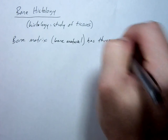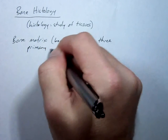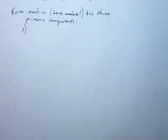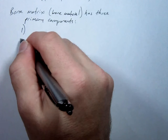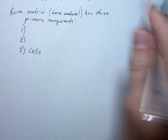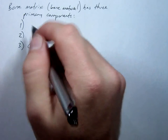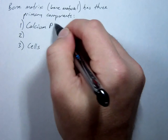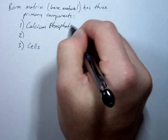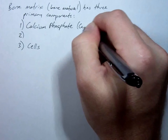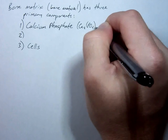It has three primary components. Cells would be number three as far as weight, but the number one component by weight is calcium phosphate. Technically, it's tricalcium phosphate — Ca3(PO4)2.